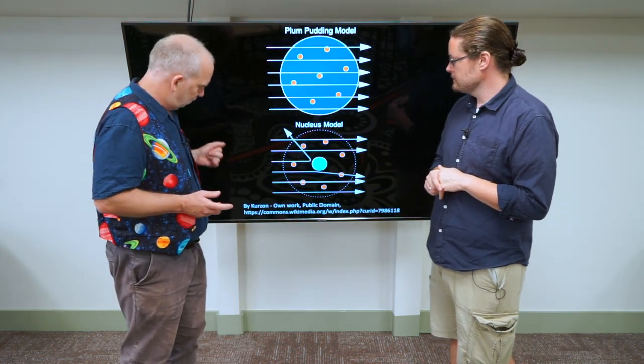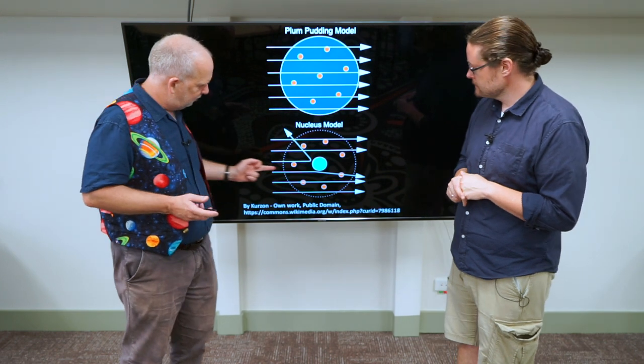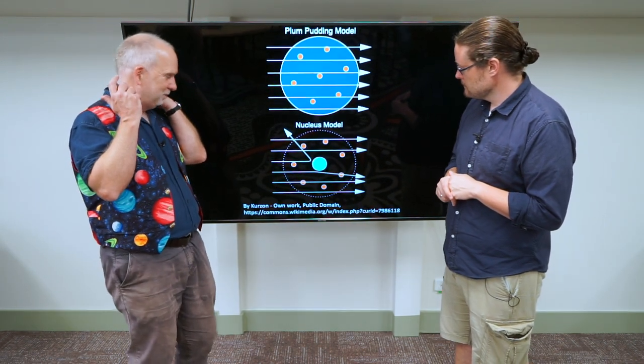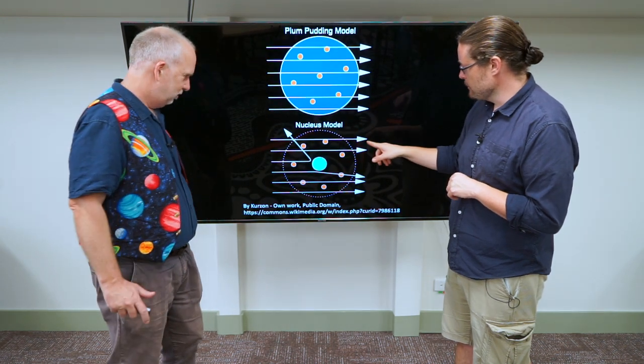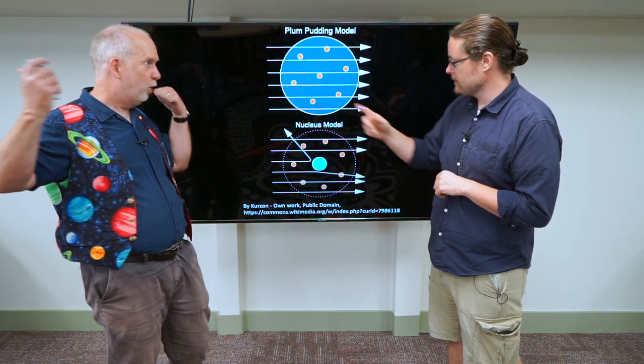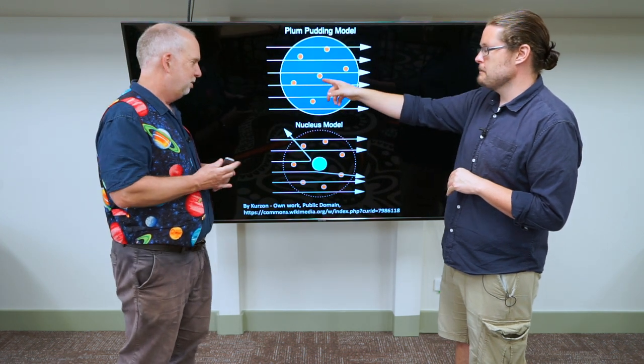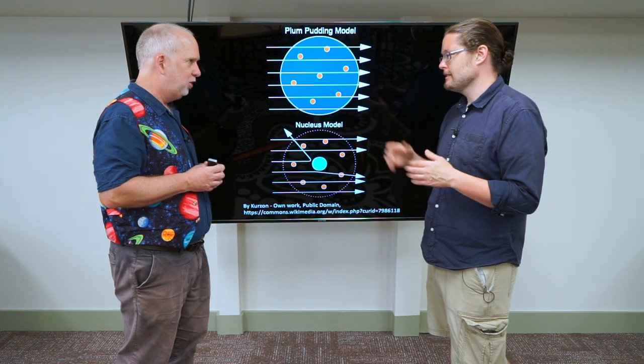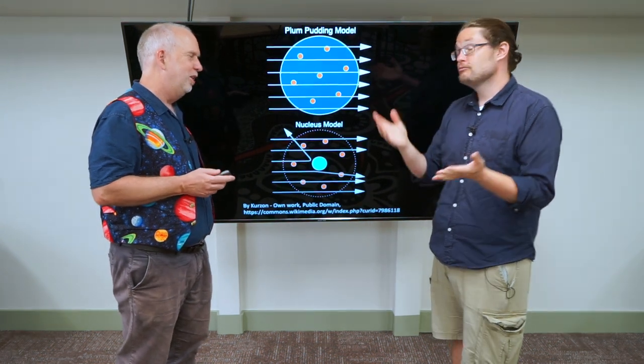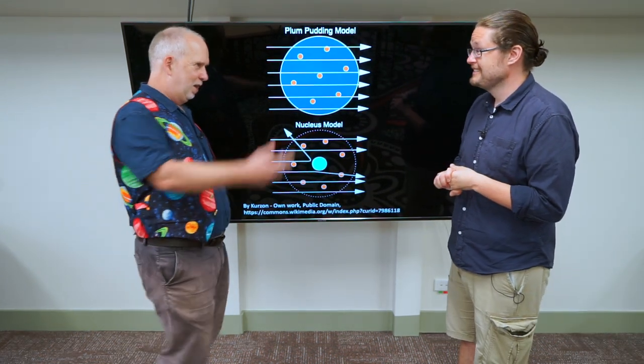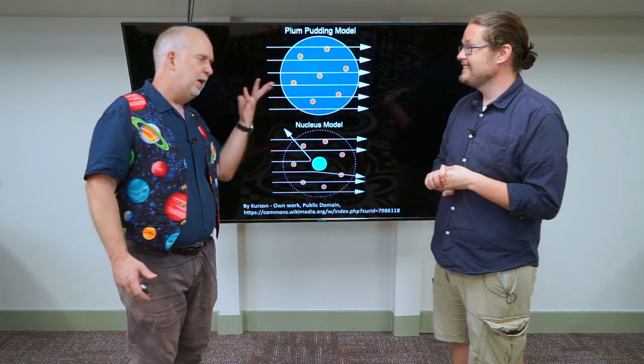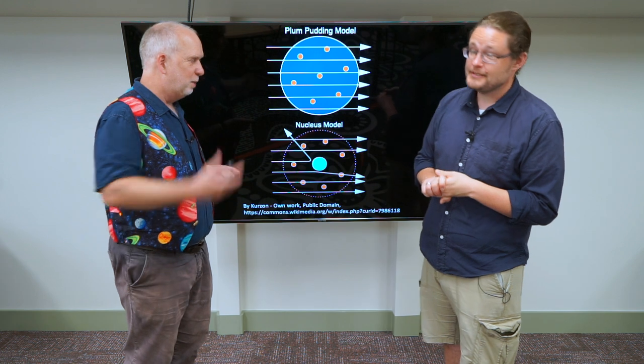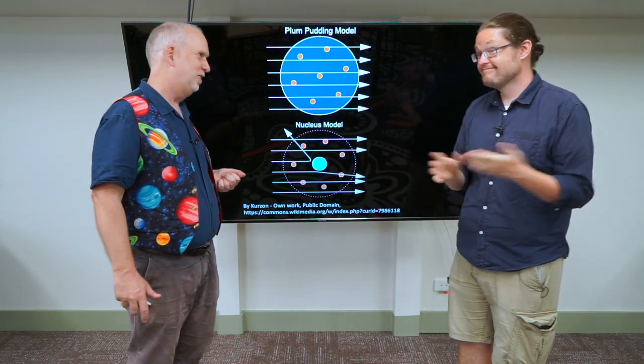But much to his amazement, what he discovered was when he fired these very heavy particles in, some of them bounced straight back out again. So some made them through, but some, a tiny fraction just sort of bounced back in enormous angles. And it would be unlikely they would just be hitting these electrons. Well, even so, this is much heavier than electrons. An electron is like 5,000 times less massive than one of these things.